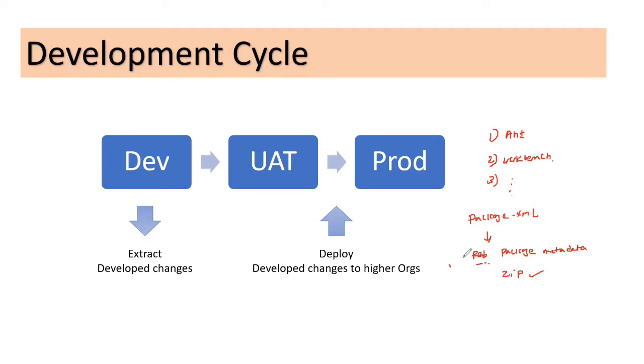Now, the process is once you have these files, we need to again use other tools, let's say Ant or Workbench to deploy these changes to the target org. You would feed in this zip file in case if you are using Workbench, you would feed in that folder structure to the destination org with the credentials that you wanted to use so that you can connect to the target org and you would start this deployment.